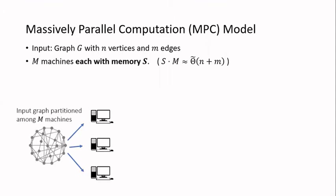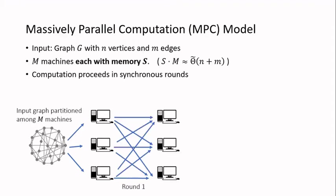At the beginning, the input graph is arbitrarily partitioned into M subgraphs of roughly the same size and they are distributed among these M machines. Then the computation proceeds in synchronous rounds. In each round, each machine performs some computation on the data stored in its local memory, and after that the machines will communicate with each other, then do the next round of computation and so on.